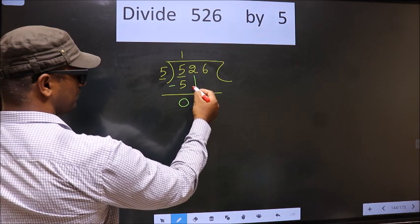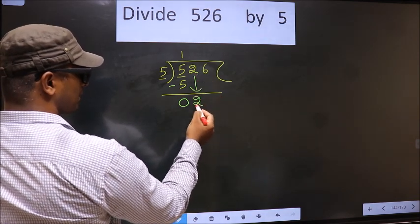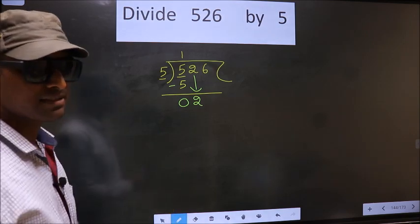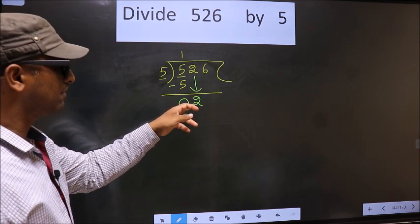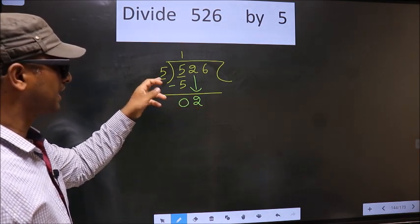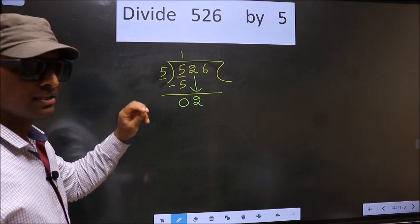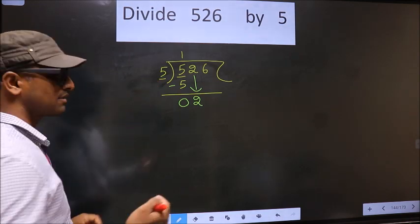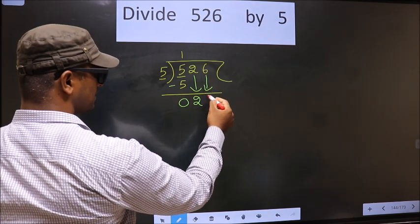Now you bring down the next number, so 2 comes down. This is where the mistake happens. Here we have 2, and here 5. 2 is smaller than 5. So what many do is they directly bring down the next number 6.